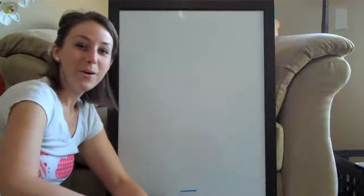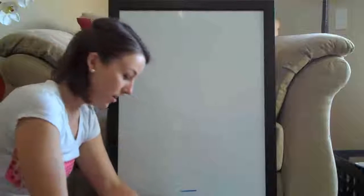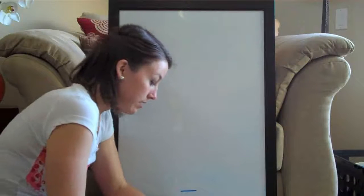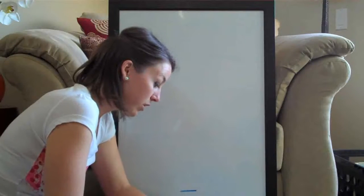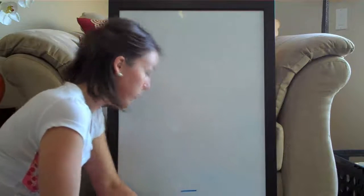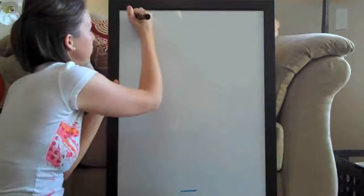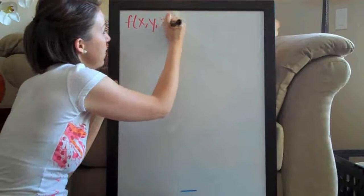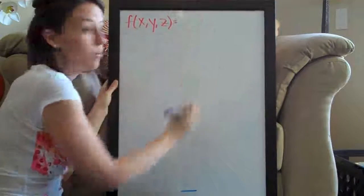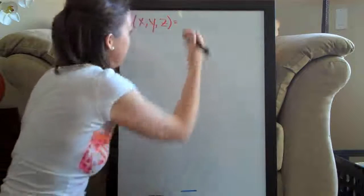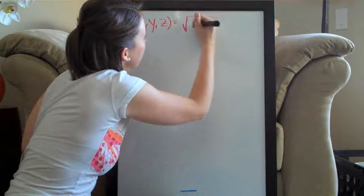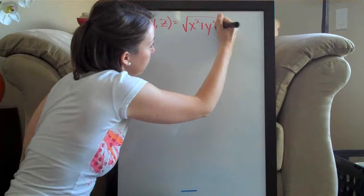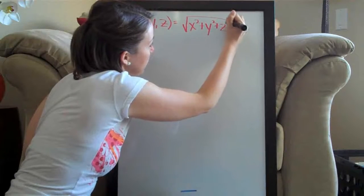Hi everyone! Welcome back to IntegralCoc.com. We're going to be doing another linear approximation problem today. This one asks us to find the equation of the tangent plane to the graph of the following function. f, this is a function in three variables, is the square root of x squared plus y squared plus z squared.